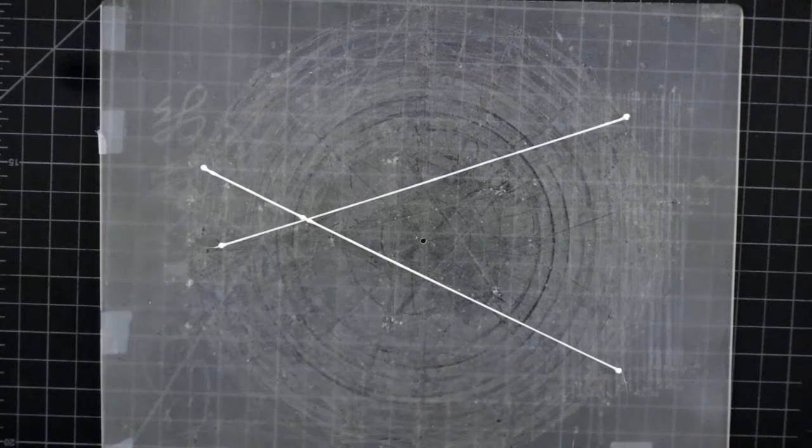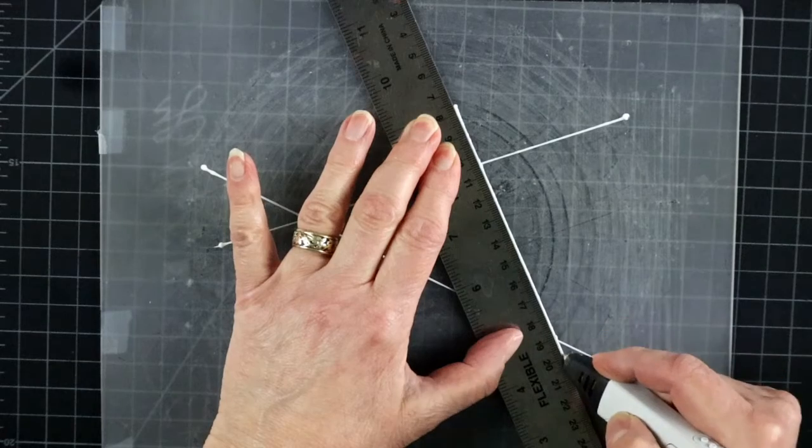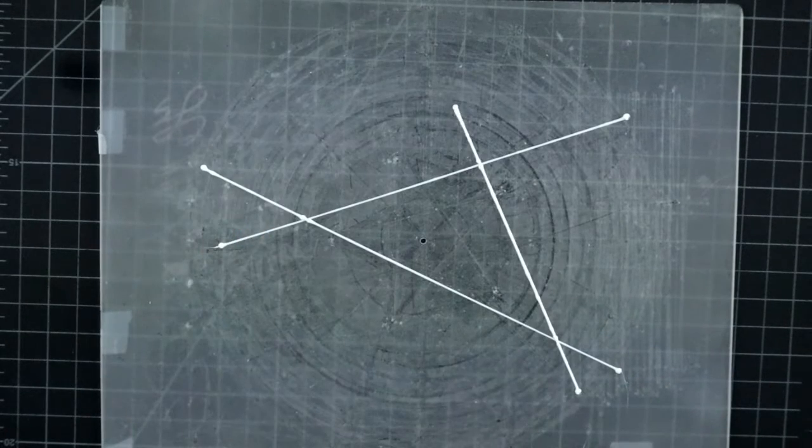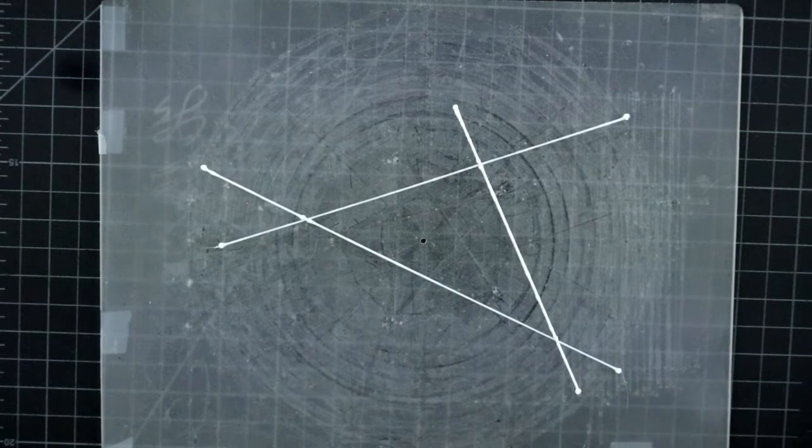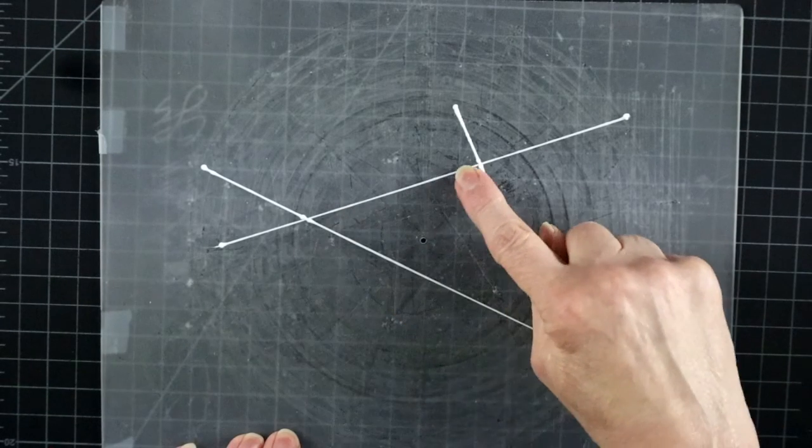However, once we add the third line, we are in business. We have a piece of fenced in real estate to work with. We have a triangle.